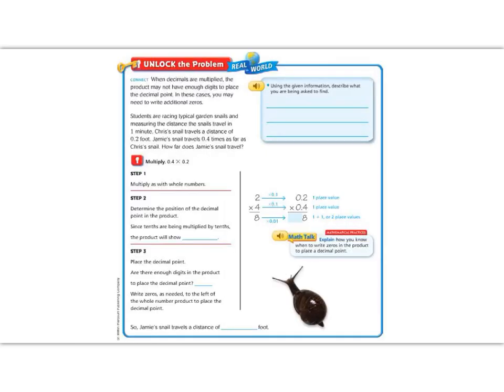Let's begin by reading the Unlock the Problem. It says, when decimals are multiplied, the product may not have enough digits to place the decimal point. In these cases, you may need to add additional zeros. It says, students are racing typical garden snails and measuring the distance that the snails travel in one minute. Chris's snail travels a distance of 0.1 foot. Jamie's snail travels 0.4 times as far as Chris's snail. How far does Jamie's snail travel?